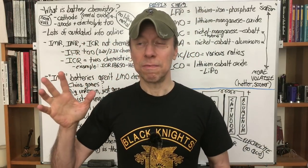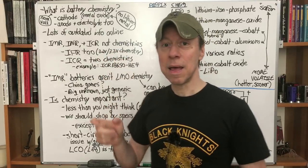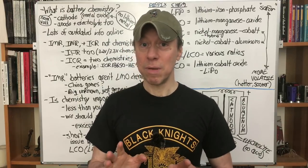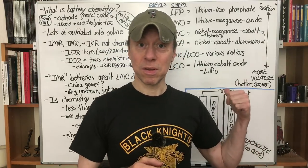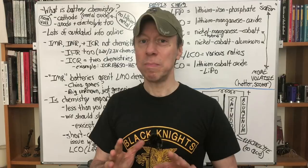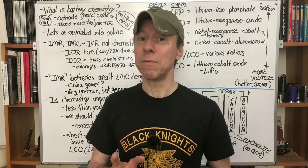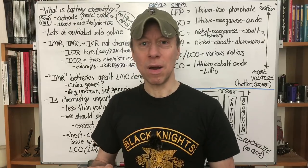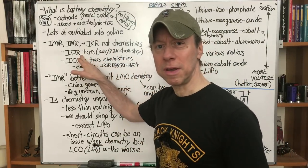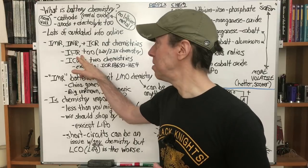A lot of the information online about battery chemistry is very outdated, and a lot of it is just wrong. IMR, INR, and ICR are not battery chemistries — they are manufacturer model number or part number prefixes. They are used primarily to point to certain battery chemistries, but as you'll see later, they can't always be used reliably. There's also IFR for a different chemistry — A123 batteries — which is a lower voltage chemistry we can't use as vapers.